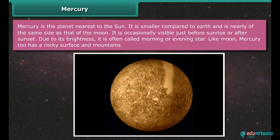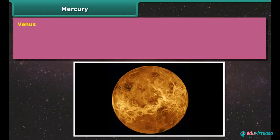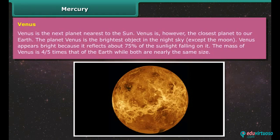Mercury is the planet nearest to the sun. It is smaller compared to earth and is nearly of the same size as that of the moon. It is occasionally visible just before sunrise or after sunset. Due to its brightness, it is often called morning or evening star. Like moon, Mercury too has a rocky surface and mountains.